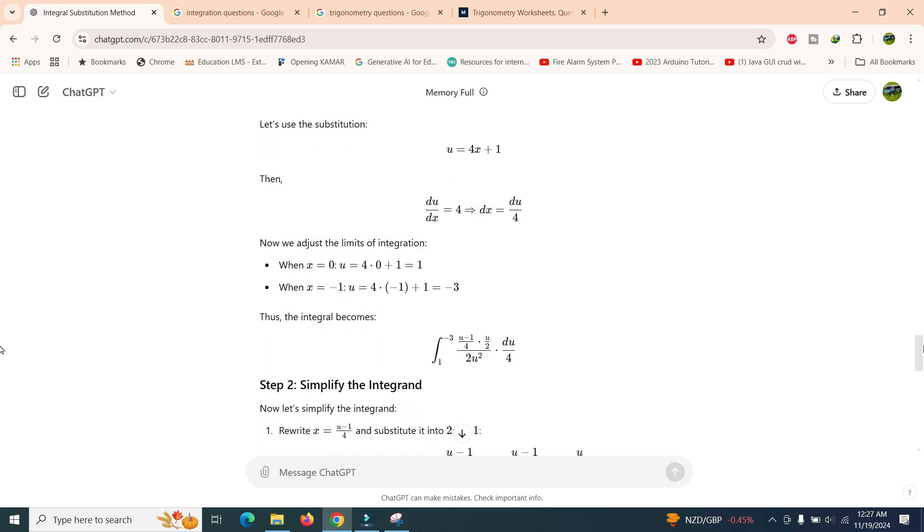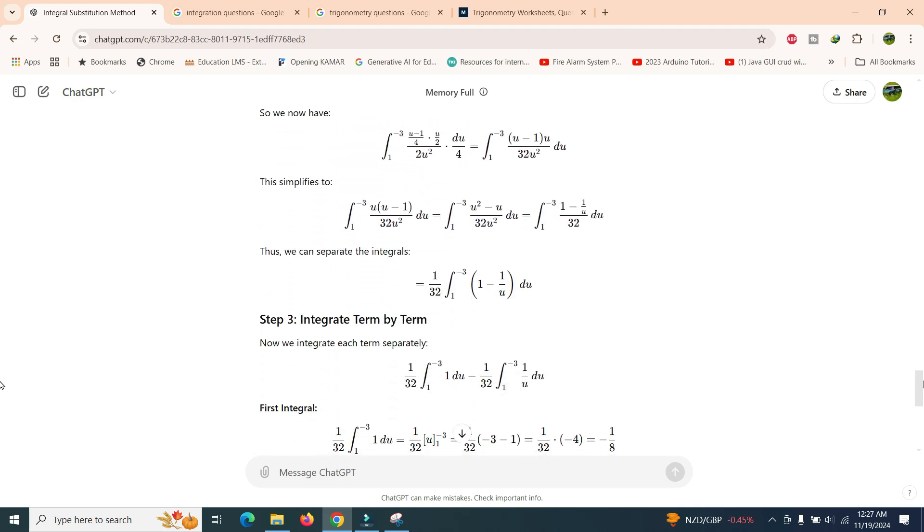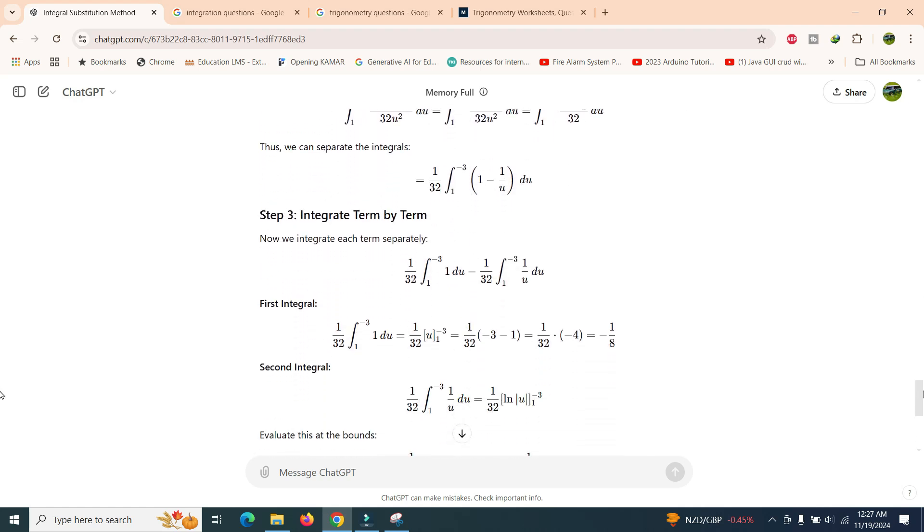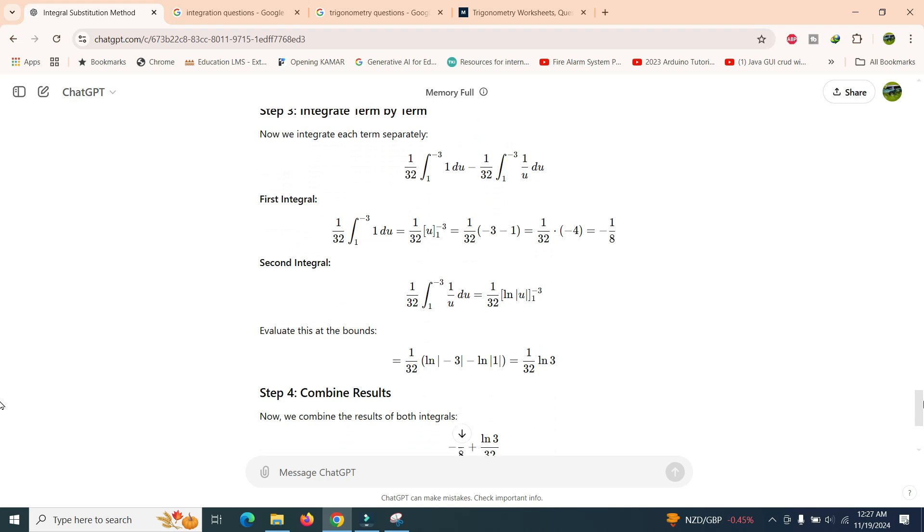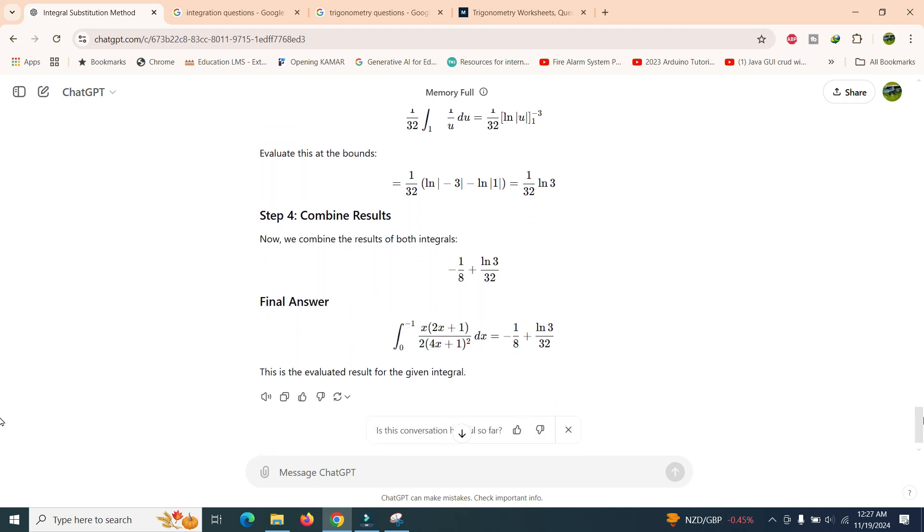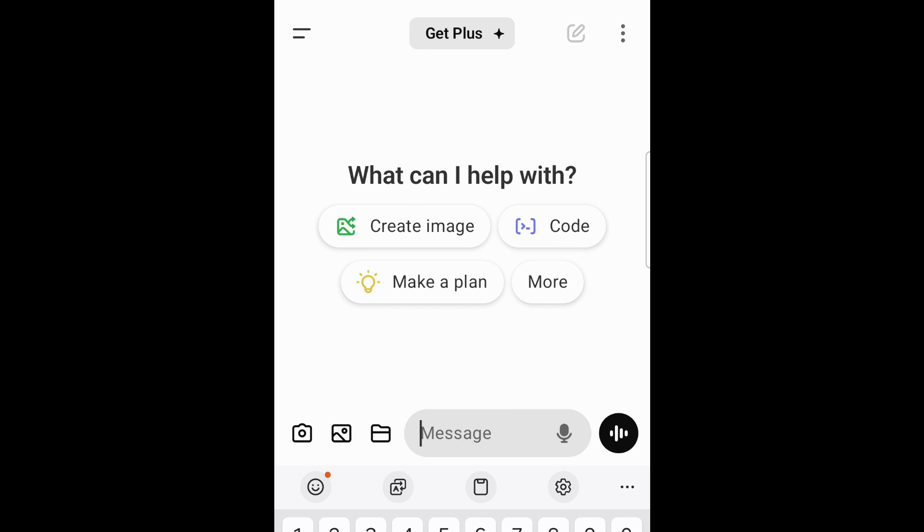This is how you can use ChatGPT web version to solve any question by simply taking the screenshot of the question and inserting that question image in ChatGPT. The easiest way to solve any question that you have written on paper using ChatGPT is to install the ChatGPT app on your phone.